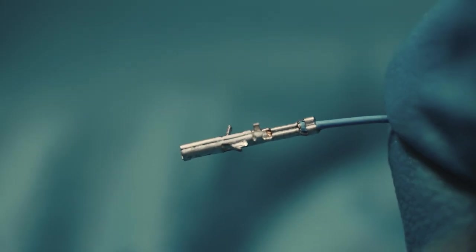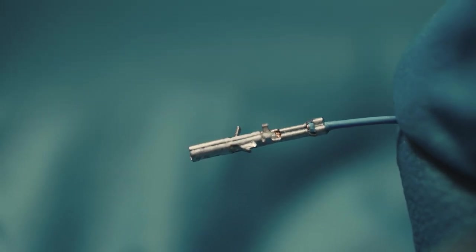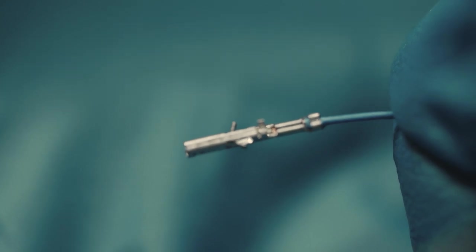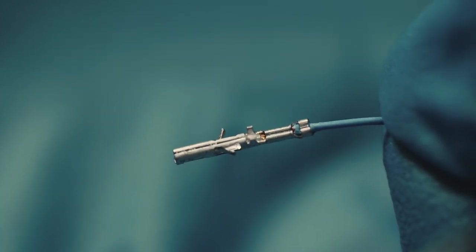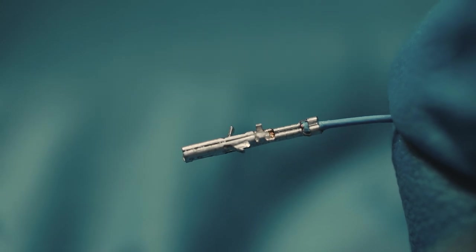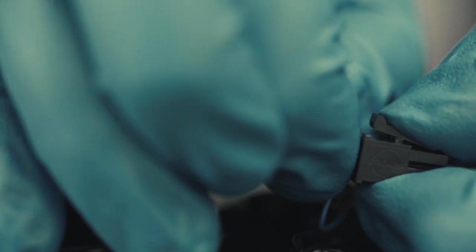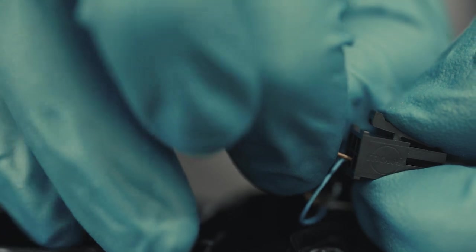Before fitting the crimps into each hole, ensure the orientation of the crimp is correct. The groove needs to be facing up. The two wings on the side need to be at 45 degrees. To ensure the crimp has been fitted correctly, you will hear a click sound.